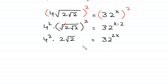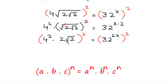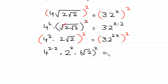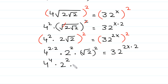Now, we take the square of both sides again. According to the rule of exponents, this power 2 is multiplied by the existing powers, giving 4 to the power 2 times 2, times 2 to the power 2 times 2, times (square root of 2) to the power 2 equals 32 to the power 2x times 2, which is 4x. Then 4 to the power 4 times 4, and 2 to the power 2 — the square cancels with the square root, leaving 2 equals 32 to the power 4x.